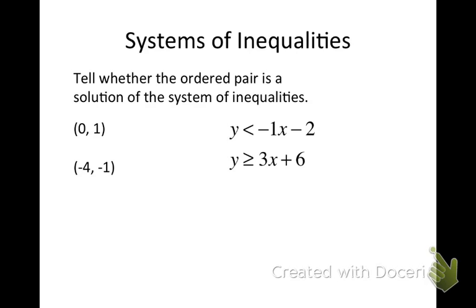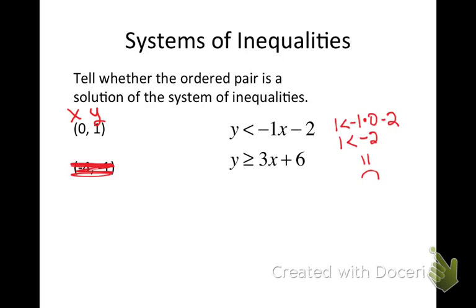One of the things I'm going to ask you to do is tell me whether an ordered pair is a solution to the system of inequalities. We take our x and y values and substitute them into our inequalities to see if we get a true statement. On the first inequality, I replace y with 1 and x with 0, giving 1 is less than -2. That is not a true statement, so this is not a solution. I don't have to do any more work.